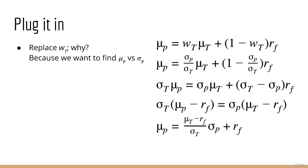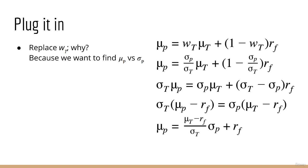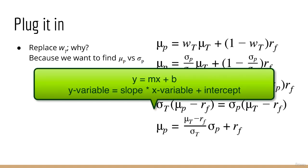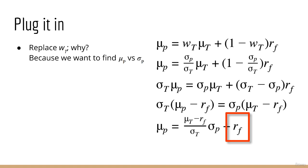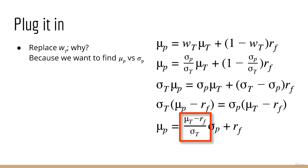Looking closely at this equation, it is linear. The x-axis variable is the portfolio risk σ_p, and the y-axis variable is the portfolio return μ_p. The equation is in the form y = mx + b — slope times x-variable plus y-intercept. The intercept is the risk-free rate r_f, which occurs when risk is zero — that makes sense, as this is when we've invested everything into the risk-free asset. Furthermore, the slope of this line is the Sharpe ratio of the tangency portfolio: the excess return divided by its standard deviation.